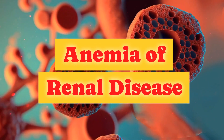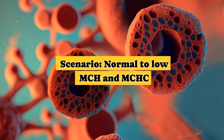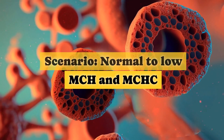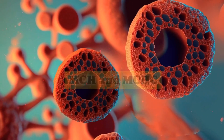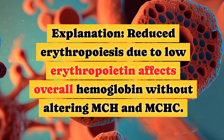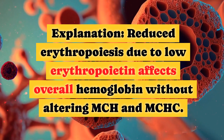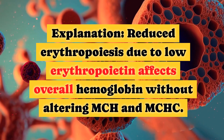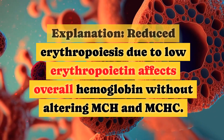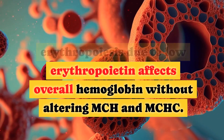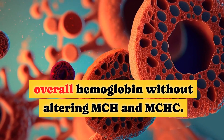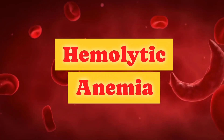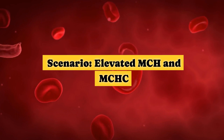Anemia of Renal Disease Scenario — Normal to Low MCH and MCHC. Reduced erythropoiesis due to low erythropoietin affects overall hemoglobin without significantly altering MCH and MCHC.